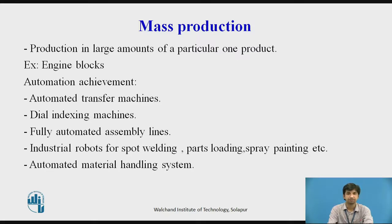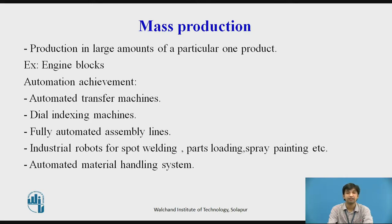Mass production involves the production of large amounts of a particular product, for instance engine blocks. Automation is achieved through automated transfer machines, dial indexing machines, fully automated assembly lines, industrial robots for spot welding, parts loading, and spray painting, as well as automated material handling systems.